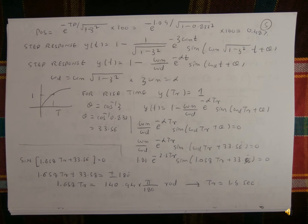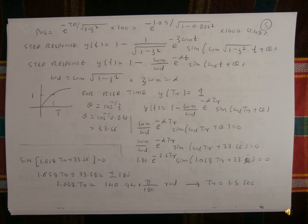Reviewing: 1 minus ωn by ωd multiplied by e to the power of minus α·t, times sin of ωd·t plus θ. Substituting: 1.81 multiplied by e to the power of minus 2.5·t, times sin of 1.058·t plus 33.5 equals 0. So sin of 1.658·t plus 33.5 equals 0, giving 1.658·t plus 33.5 equals plus or minus 180 degrees.